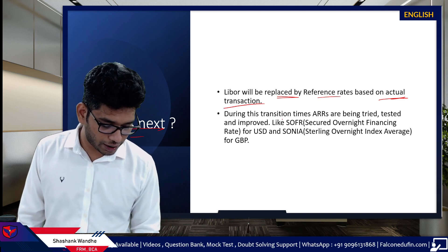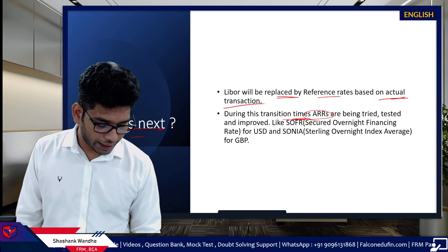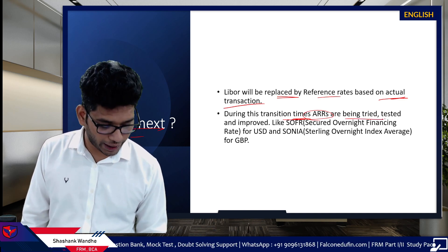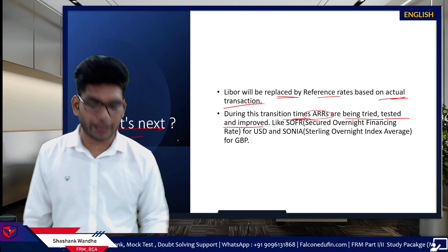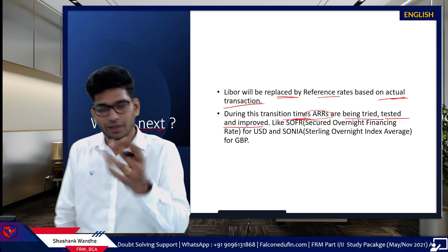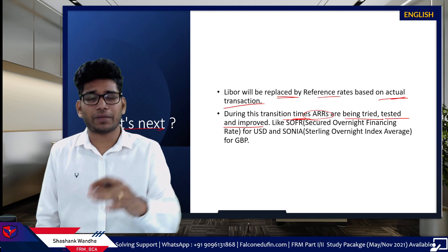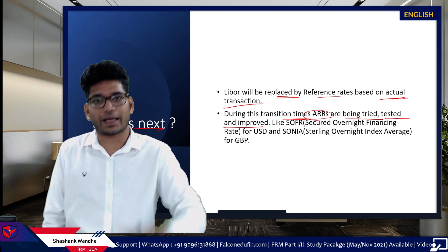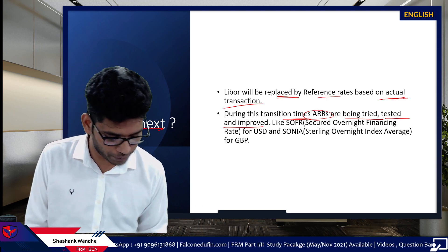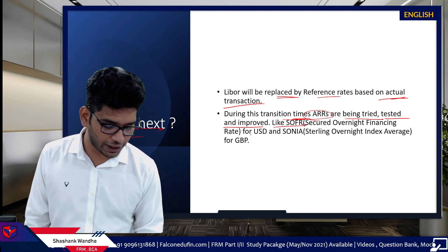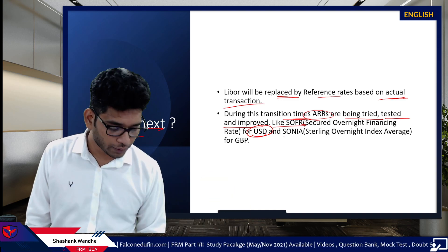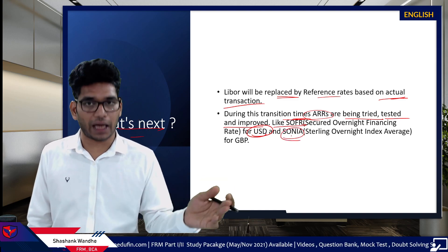During this transition time, ARRs — Alternate Reference Rates — are being tried, tested, and improved. SONIA first came into the picture around 2017 and was relaunched in 2019 with a new improved calculation methodology. SOFR will replace USD LIBOR and SONIA will replace GBP LIBOR.